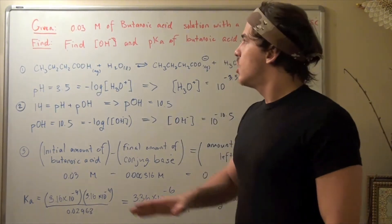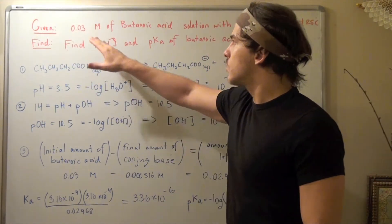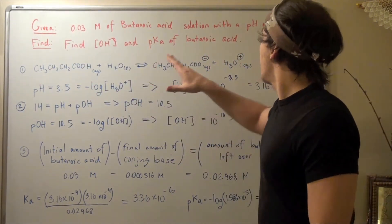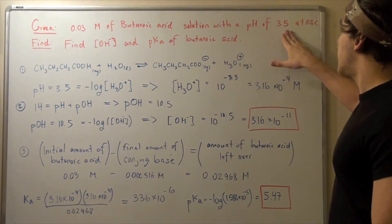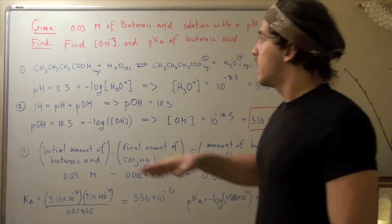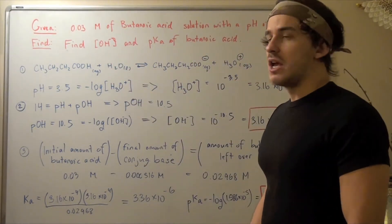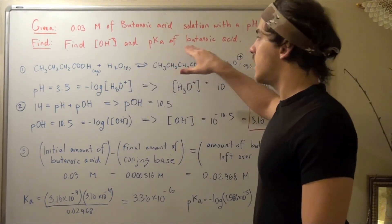In this example, we begin with 0.03 molar of butanoic acid and a pH of 3.5 at 25 degrees Celsius. We want to find the hydroxide concentration as well as the pKa of our butanoic acid.